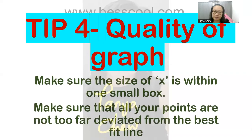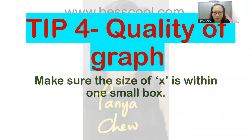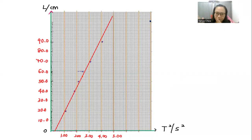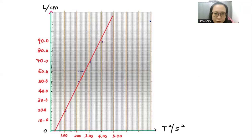And make sure that all your points are not too far deviated from the best fit line. You look at all my readings, all my points are very close to the straight line. So what do I mean by not too far deviated? You check from one of the points. You need to make sure the horizontal distance from the point, from your reading to the straight line, it cannot be more than two and a half small squares. That is what I meant by quality. If it is more than two and a half of the small square, that means your graph is of low quality.